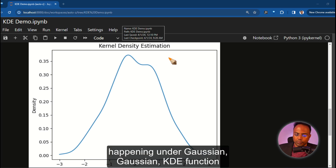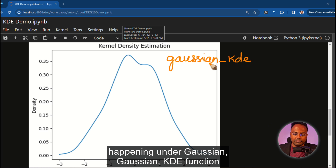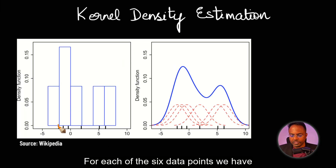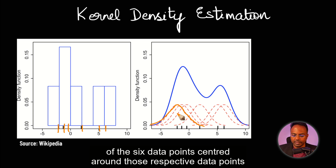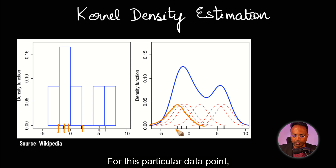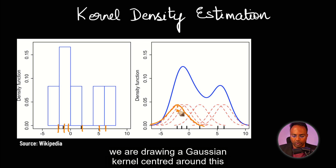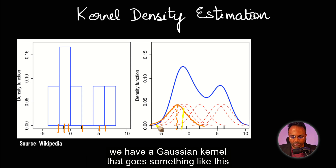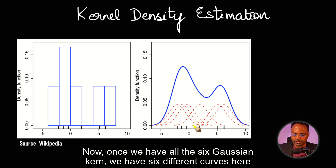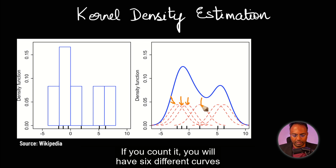So now what we want to know is what is happening under the Gaussian KDE function. What happens is this: for each of the six data points we have here, we draw a Gaussian kernel for each of the six data points centered around those respective data points. So for this particular data point, we are drawing a Gaussian kernel centered around this. Likewise, for this particular data point, we have a Gaussian kernel that goes something like this. Now, once we have all the six Gaussian kernels, we have six different curves here. If you count it, you will have six different curves.